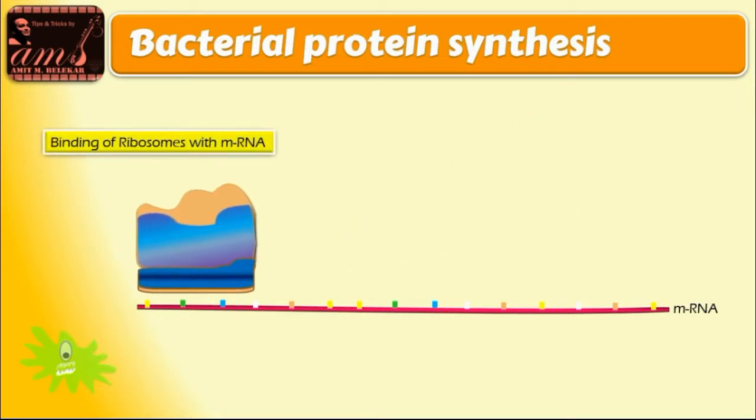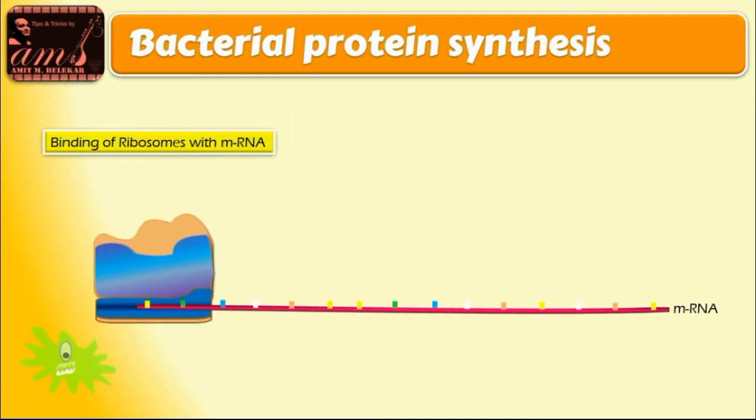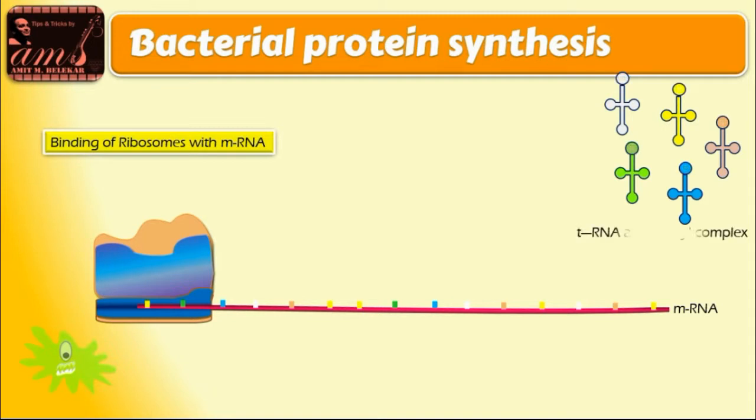Specifically, the 30S subunit binds to the mRNA strand and reads the codon present on it, attracting the tRNA with the same codon which carries a specific amino acid. This is called the tRNA amino acid complex.